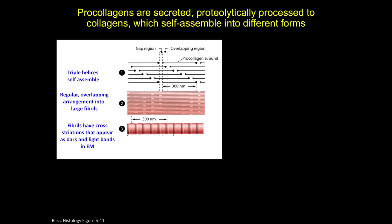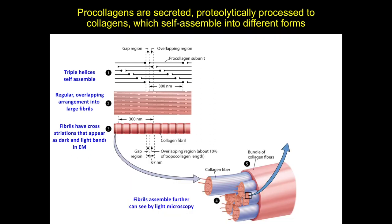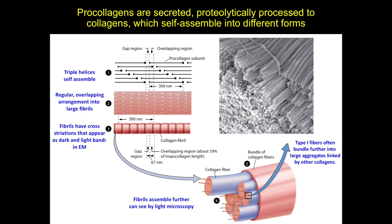Types 1, 2, and 3 collagens form fibrils, but type 2 and type 3 stop their assembly at this step, while type 1 fibrils assemble even further to form larger fibers visible under the light microscope. Those type 1 fibers bundle even further, linked and stabilized by other collagens, and the striations and bundling are clearly visible in both electron microscopy and light microscopy.